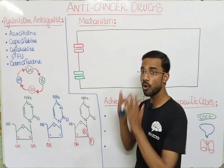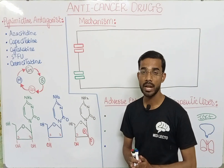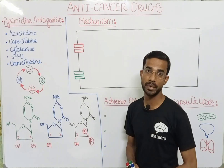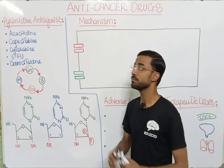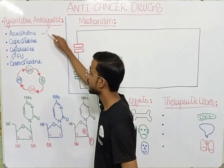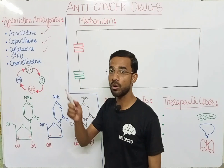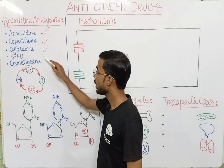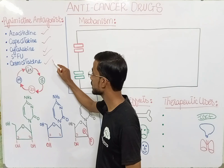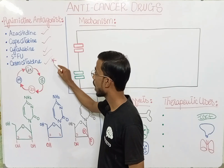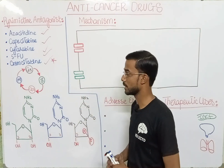If you see here, the five most important drugs found in the pyrimidine antagonist class are azacitidine, capecitabine, cytarabine, 5-fluorouracil, and gemcitabine. And gemcitabine is actually our main focus in this lecture.